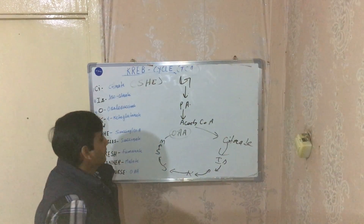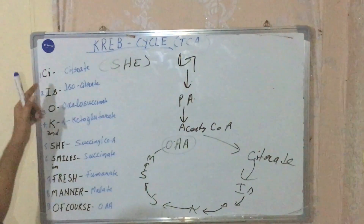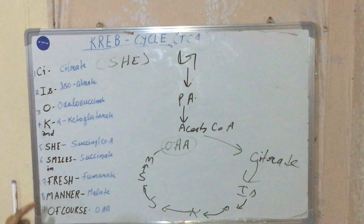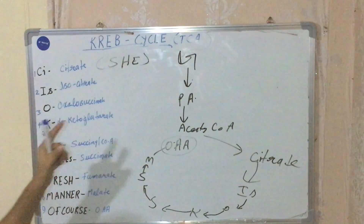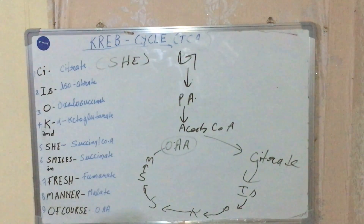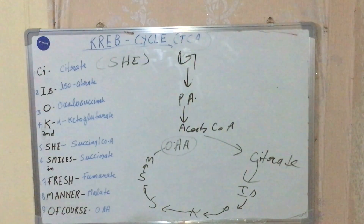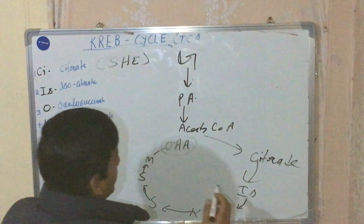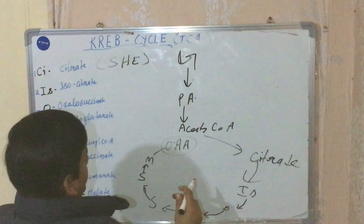So here is our mnemonic — you can remember this Krebs cycle in a very simple manner. Once it flows, you will be able to understand and recall each step using this mnemonic.